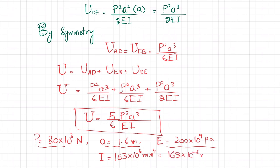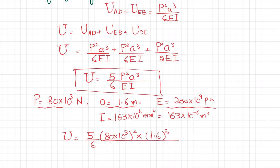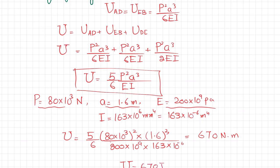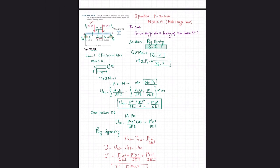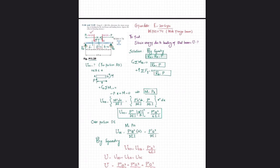Substituting all values into U equals 5/6 times P²a³ divided by EI: U equals 5/6 times (80 times 10³)² times (1.6)³ divided by (200 times 10⁹ times 163 times 10⁻⁶). This gives U equal to 670 Newton-meters, or 670 joules. That is the answer to problem 11.29. I hope you enjoyed this video — if you have any questions, ask in the comment section.